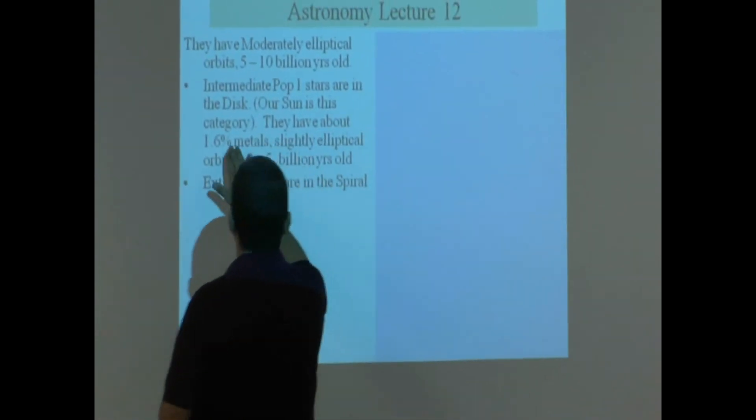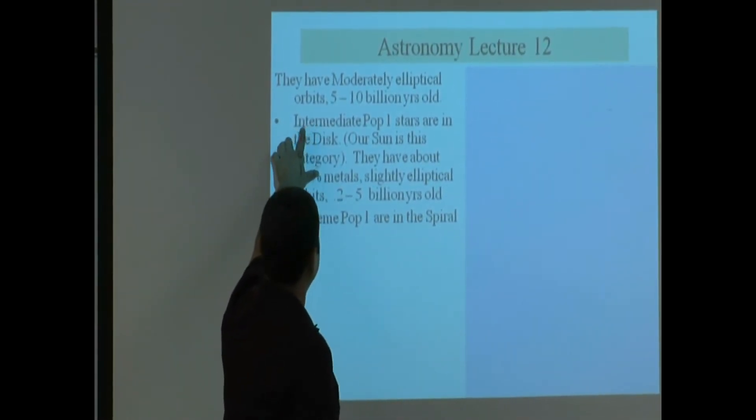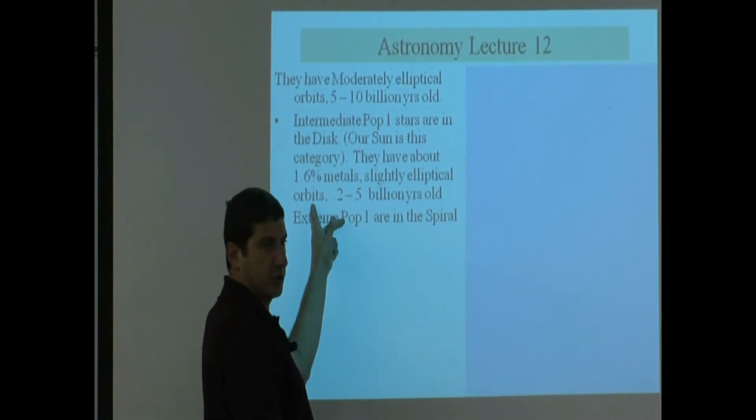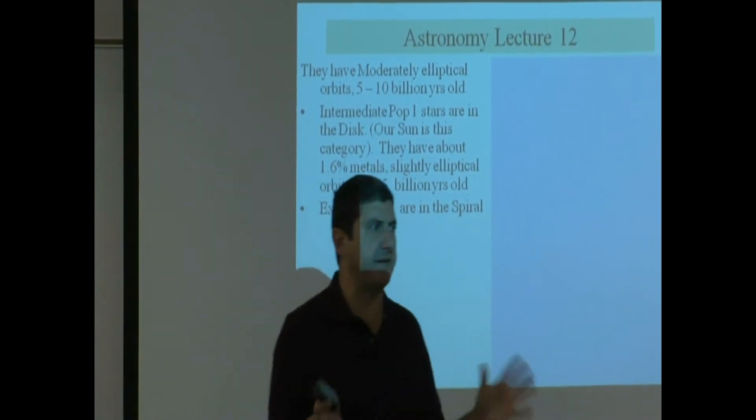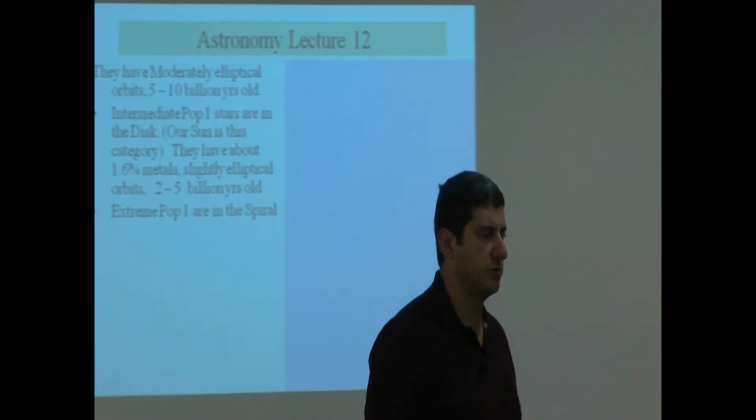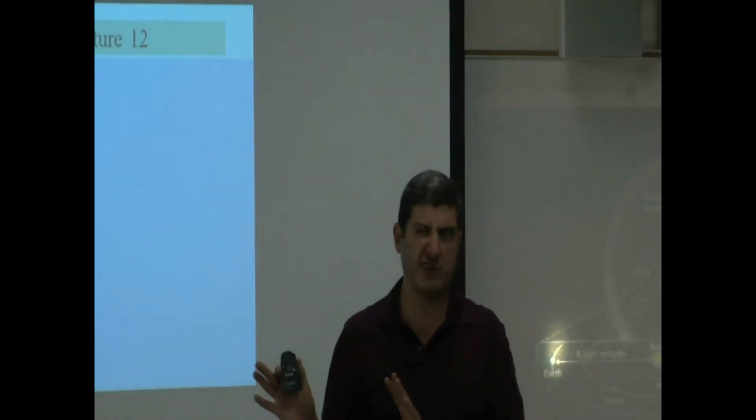They have 1.6% metals. That's the intermediate Pop 1. They have slightly elliptical orbits, and they are 0.2 to 5 billion years old. Our sun is about 4 and a half to 5 billion years old. So it formed 4 and a half to 5 billion years ago.